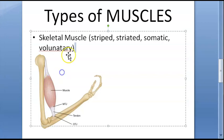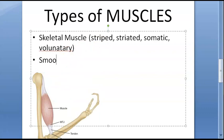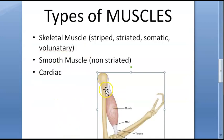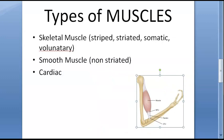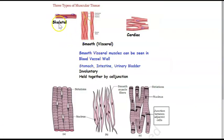The three types of muscles are: skeletal muscle, smooth muscle, and cardiac muscle. Skeletal muscle is attached to bone and helps bring about movement. Smooth muscle is also called non-striated. So the three types are skeletal, smooth, and cardiac.